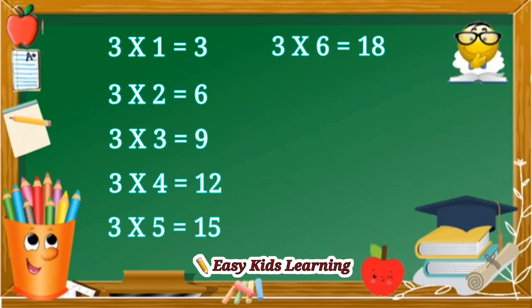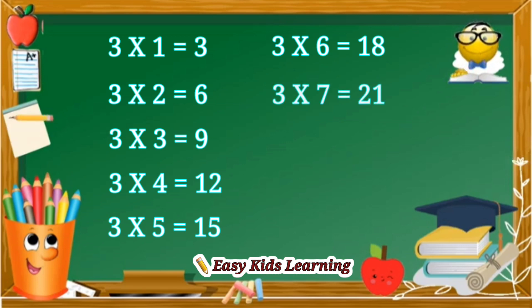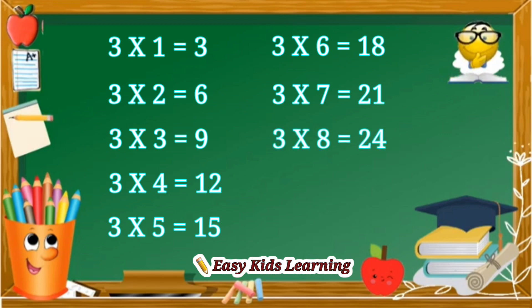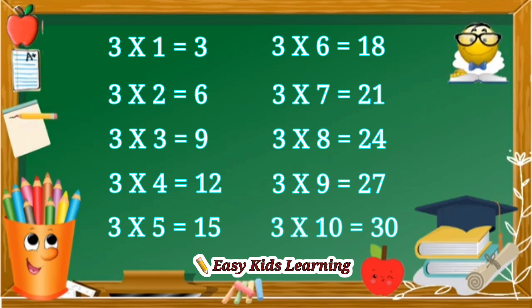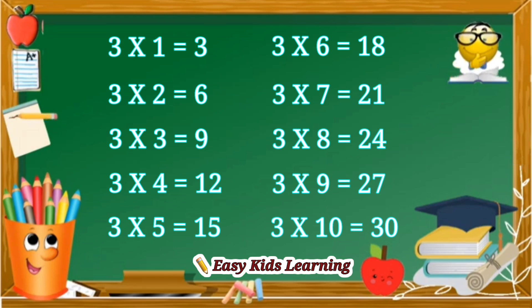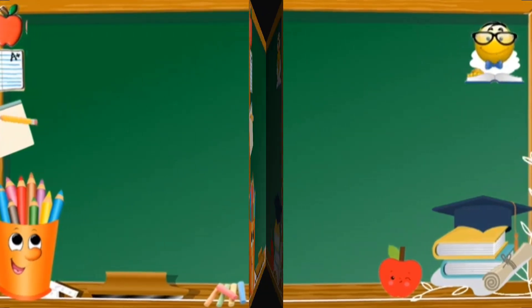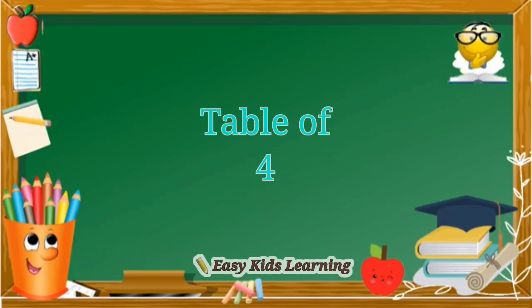3 sixes are 18. 3 sevens are 21. 3 eights are 24. 3 nines are 27. 3 tens are 30.